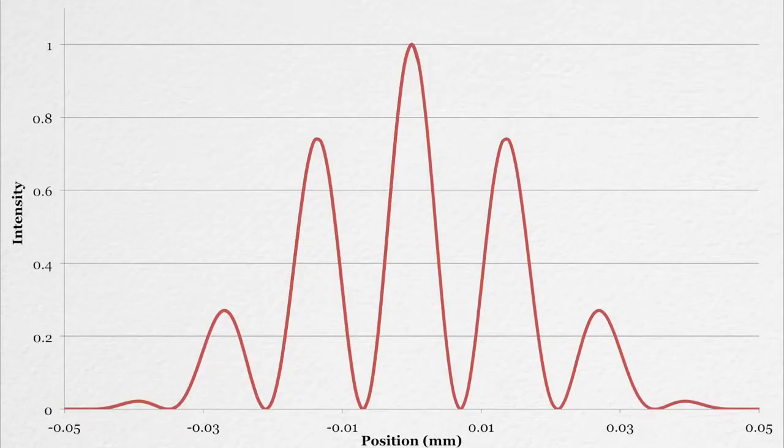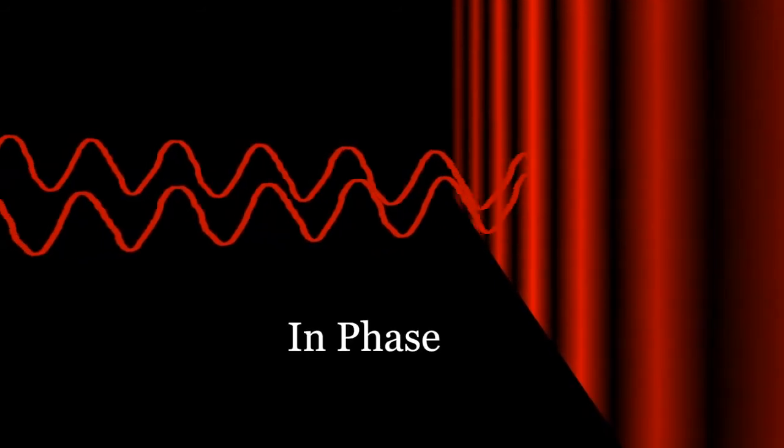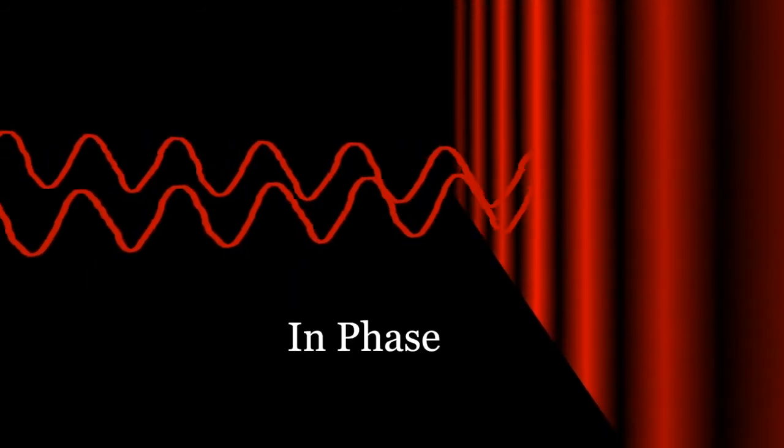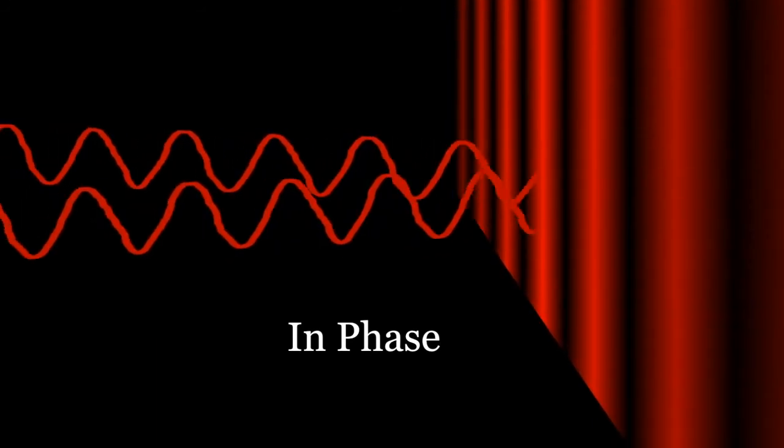This is what a graph of intensity versus position would look like for the interference pattern. What creates that pattern? Consider the bright spot in the middle. The light from each slit has to travel the same distance to reach that point, and hence both waves arrive in phase. That means crests with crests and troughs with troughs. So they add together and create an interference maximum, a bright spot.